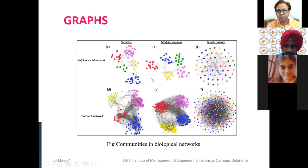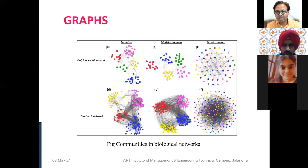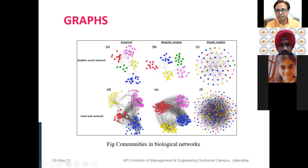Some graphs from nature: we looked at the dolphin social network to understand who talks to whom. Similarly, a food web network shows who eats whom — if a node kills another node, there is an edge between them. Not every animal eats every other animal, so we have separate communities of who eats whom. This is just a different layout of the same graph. We will learn about different graph layouts today.